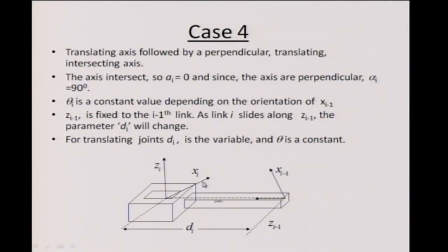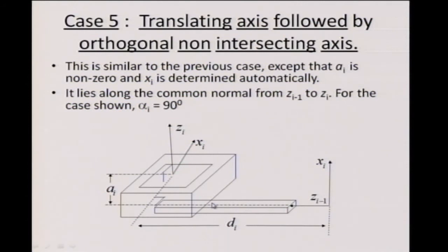x_i is defined uniquely, but x_{i-1} depends on the previous joint. Depending on the orientation of x_{i-1}, there will be an angle between them, and we can measure that angle about z_{i-1} — but it is fixed. When this link translates, this angle does not change; only d_i can change. There is also the small variation in which the two axes are not intersecting, in which case x_i is along the common normal and the rest follows.